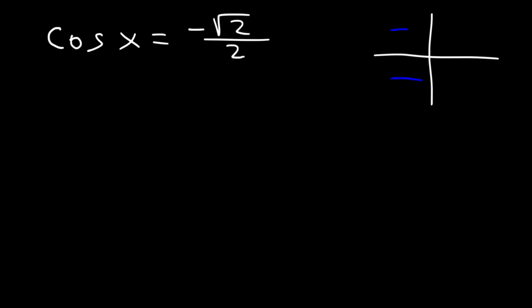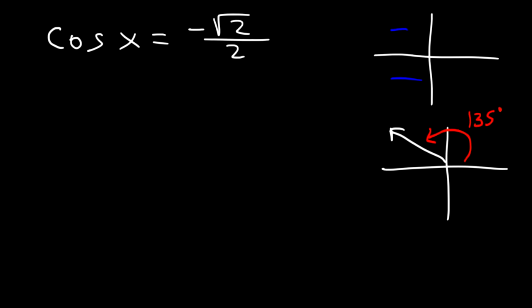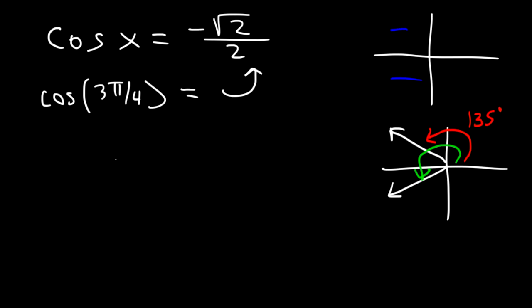Cosine 45° is equal to √2/2. So in quadrant 2, an angle of 135° produces a reference angle of 45°. And in quadrant 3, 225° produces a reference angle of 45°. Therefore, cosine of 135°, or cosine of 3π/4, equals negative √2/2. And also cosine of 5π/4 equals the same value.